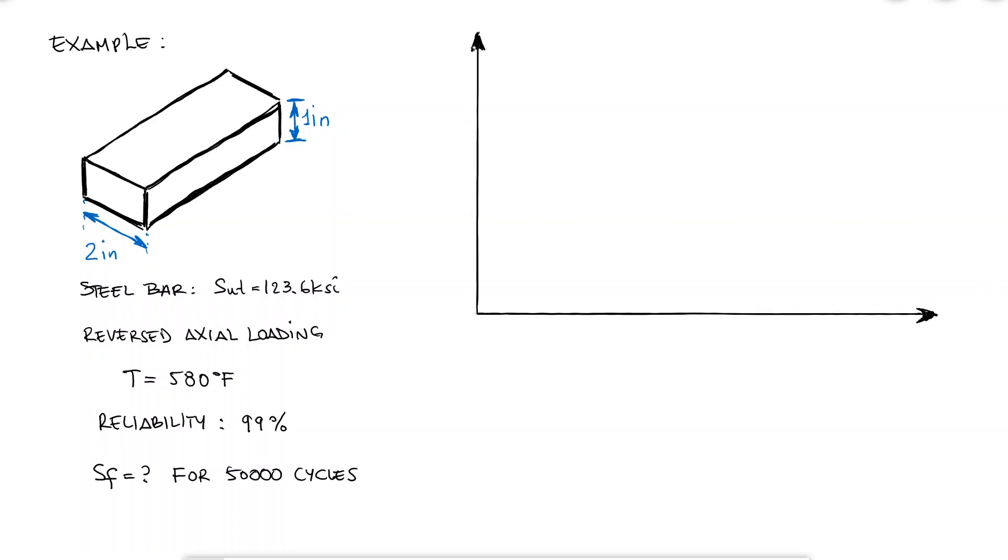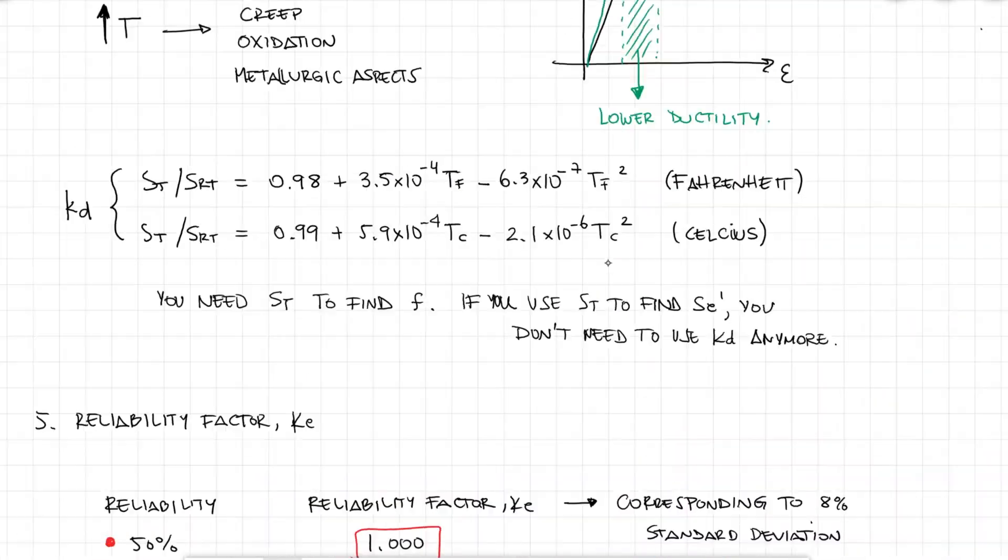Understanding how this problem is solved is much simpler if we look at an S-N diagram. My goal is to obtain the fatigue strength for n equal to 50,000 cycles. And to fully capture the behavior of the S-N curve, I need to find the F coefficient and the endurance limit. Both the first estimate of the endurance limit, Se prime, and the F coefficient are functions of the ultimate strength. And since the part is going to be operated at 580 Fahrenheit, and we already know that the ultimate strength can change with temperature, the first calculation I should look at should be at the temperature factor, or the St over SRT ratio.